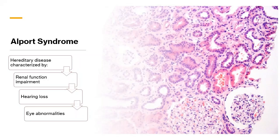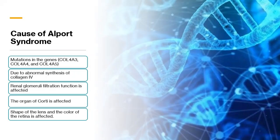This syndrome was first described in the British medical literature by Dr. Cecil Alport in 1927. Later on, several cases were described and the disorder was named after Dr. Alport in 1961. The cause of Alport syndrome is mutations in the genes which are responsible for the synthesis of a protein called type 4 collagen.